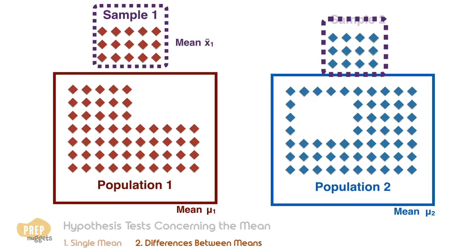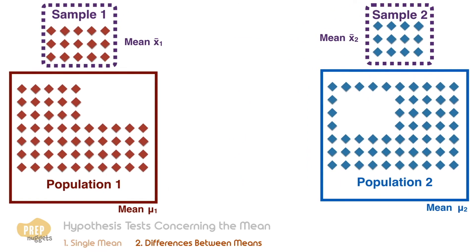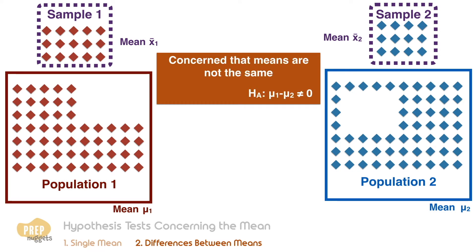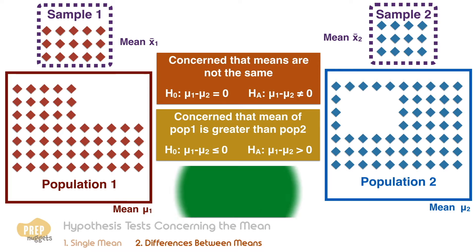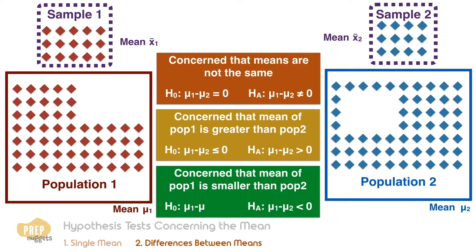Here we're concerned about the difference between the two means. If we're concerned that the two means may not be the same, the alternative hypothesis would be mu1 minus mu2 not equal to 0, and the null hypothesis would be mu1 minus mu2 equal to 0. If we're concerned that mu1 is larger than mu2, the alternative hypothesis would be mu1 minus mu2 greater than 0, and the null hypothesis would be mu1 minus mu2 less than or equal to 0, and vice versa for the case where mu1 is smaller than mu2.